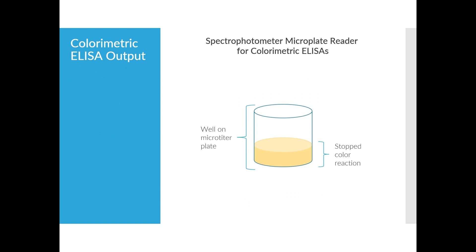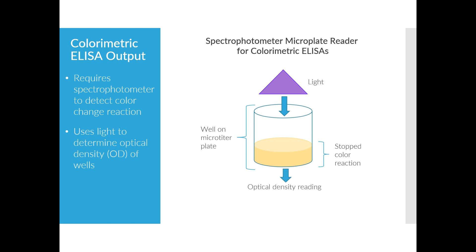Colorimetric assays require a standard microplate reader to detect the color change reaction between the enzyme label and substrate. The reader sends a wavelength, typically 450 nanometers, through each well to determine the optical density or OD reading of the samples. Depending on the plate reader, the OD readings provided are between 0 and 4 to the thousandth decimal point. The OD readings are limited by the capacity of the spectrophotometer.